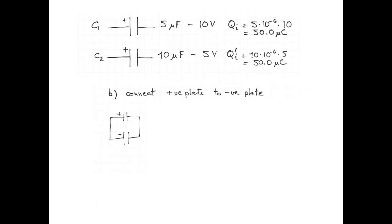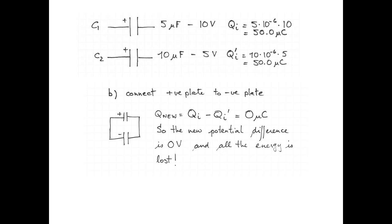Now let's see what happens when we reconnect the positive plate to the negative plate. The new charge on the capacitor arrangement will be the charge on capacitor 1 minus the charge on capacitor 2, and that's 0 coulombs. That means the new potential difference across the capacitor arrangement is 0 volts, and all the energy is lost.